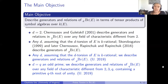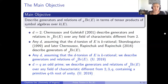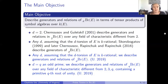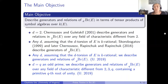Furthermore, when d is an odd prime q, I was able to describe generators and relations of the q-torsion of the Brauer group of E over any field of characteristic different from 2, 3, and q, containing a primitive q-th root of unity. The assumption of characteristic different from 2 or 3 comes from the fact that elliptic curves look slightly different in those characteristics; I believe most results still hold there. The requirement of a primitive q-th root of unity comes from needing to apply the Merkurjev-Suslin theorem and write down symbol algebras explicitly.